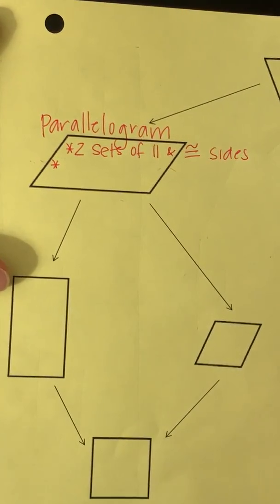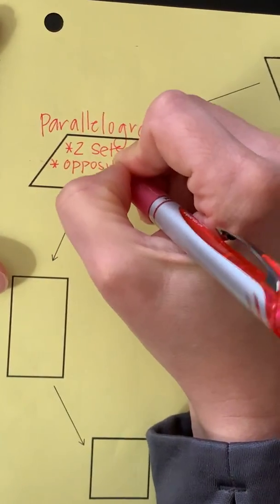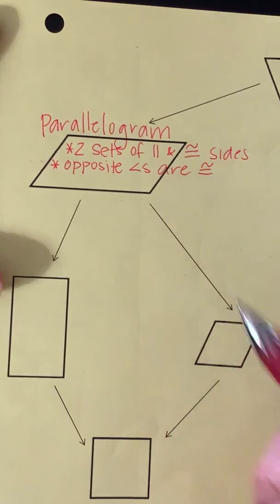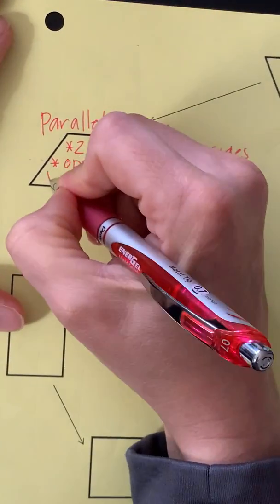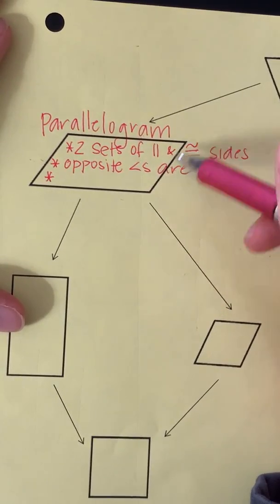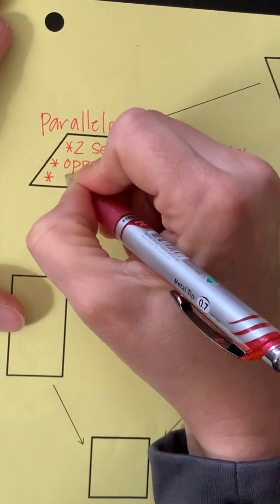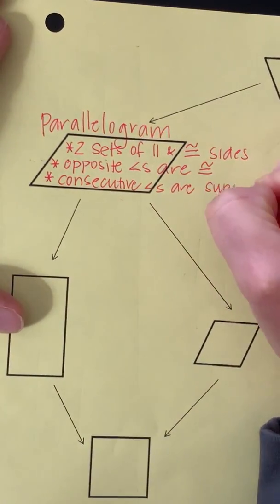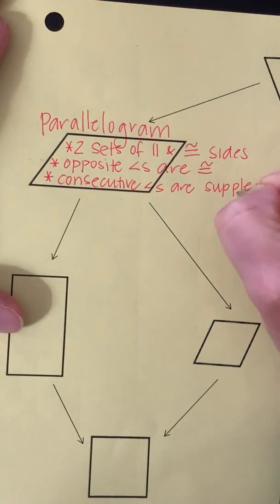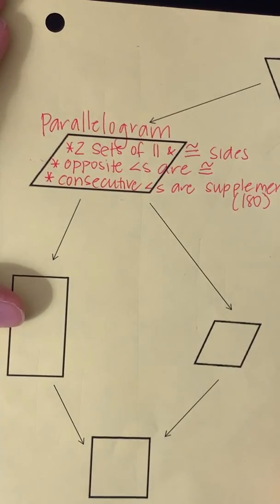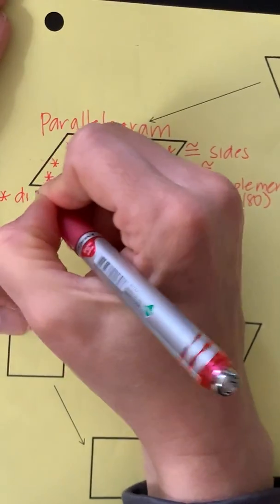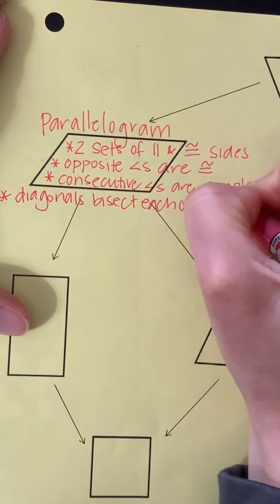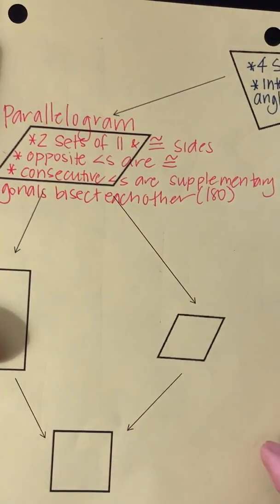Another property is that the opposite angles are congruent — you can use 'equal' if you prefer. The angles that are next to each other are supplementary, which means they add to 180 degrees — so the consecutive angles add to 180. And finally, the last property is that the diagonals bisect each other. Those are all the properties we had written down before; we're just writing them all in one place now.